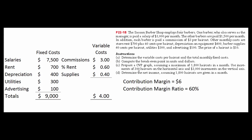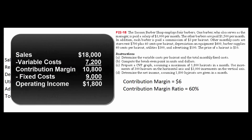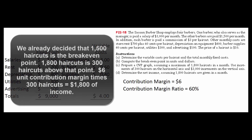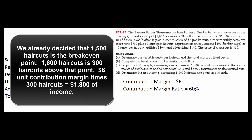There are different ways to answer Part D. You might say: at 1,800 haircuts, revenue is $18,000; variable costs are $4 times 1,800 equals $7,200; contribution margin is $10,800 minus $9,000 fixed costs, giving net income of $1,800. Or you could say: since break-even is 1,500 haircuts, all fixed costs are covered above that, and the $6 unit contribution margin on each of the 300 additional haircuts goes straight to the bottom line — $6 times 300 equals $1,800. That's really all there is to a simple cost volume profit problem.